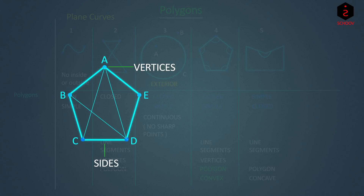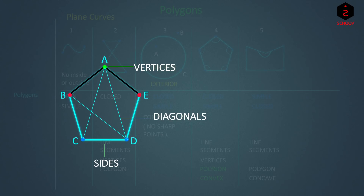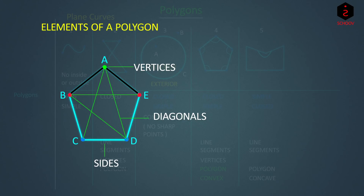Line segments which join one vertex of a polygon to any other vertex that is not immediately adjacent — not the left or right neighbor — are called diagonals of a polygon. For example, taking vertex A, we leave vertices B and E which are the other ends of sides AB and AE, and join A to any remaining vertex C or D to get a diagonal. Similarly for B, leave A and C and join B to D or E to get diagonals BD or BE. So sides, vertices, and diagonals are all elements of a polygon.